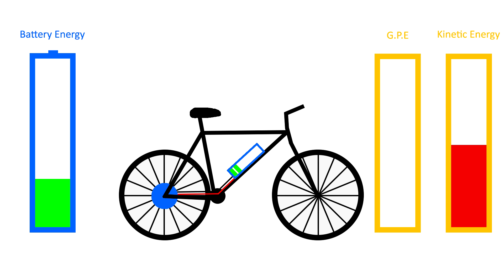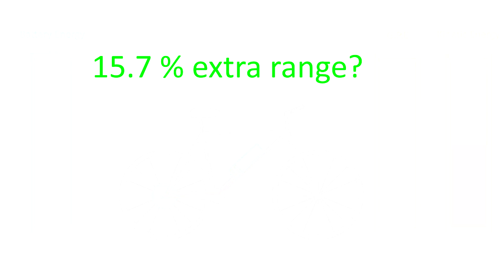So does this mean that regenerative braking increases the range by 15.7%? Well, not exactly. You see, this test only accounts for periods of the bike ride where battery energy is converted into gravitational potential energy or kinetic energy, which can therefore be converted back into battery energy.